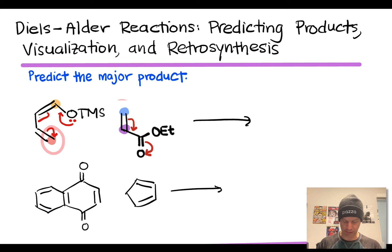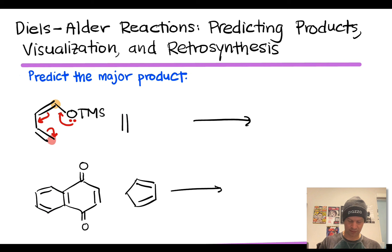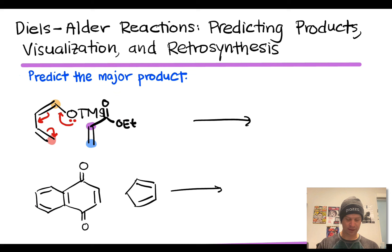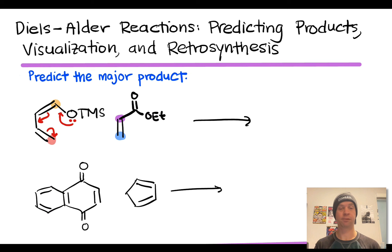To accomplish this, we flip the dienophile vertically, so the ester group is now at the top. This places the blue (electrophilic) carbon of the dienophile adjacent to the red (nucleophilic) terminal carbon of the diene. Now we can envision those two carbons connecting pretty easily — we've handled the regiochemistry by flipping the dienophile.